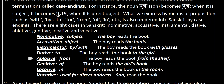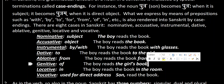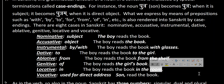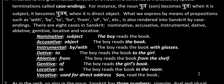Ablative means 'from' — for example, 'the boy reads the book from the shelf'; the shelf here is ablative, indicating where the book is coming from. Genitive shows possession — for example, 'the boy reads the girl's book' or 'the boy reads the book of the girl'; the book is taking the genitive case, showing that the book belongs to the girl.